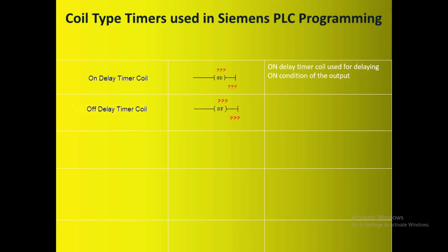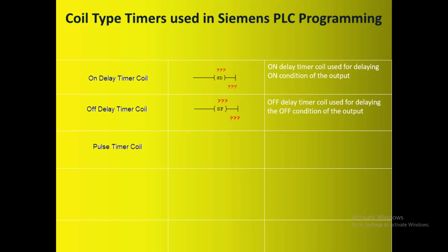The next one is the Off Delay Timer Coil, and this is the notation used in PLC for this timer. The Off Delay Timer Coil is used for delaying the off condition of the output. The output coil type timer needs one extra input contact to turn on its output. A reset coil from the bit instructions needs to be used separately to reset the timer.